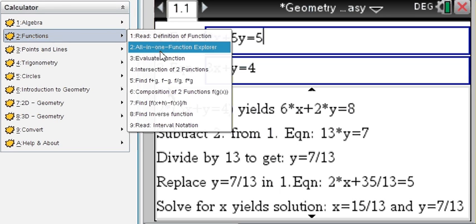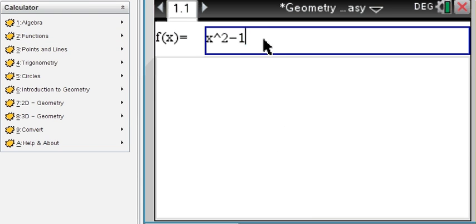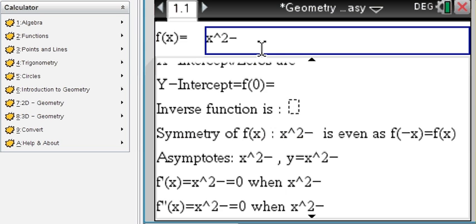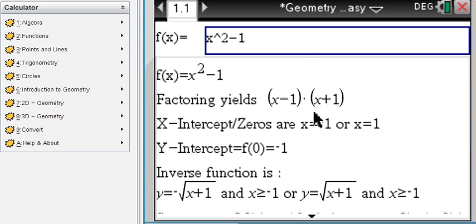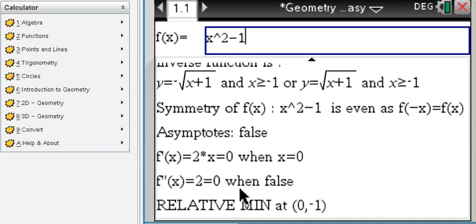Functions. Say you want to explore a function such as x squared minus 1. Scroll up. And you can see how that function is being factored, the x and y intercepts, inverse function is shown here, asymptotes, non-symmetry, even function. Derivatives are shown. Relative mins and maxs are found as well.